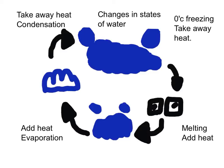Take away the heat. Melting the ice equals to add heat to make water again. Add heat by doing evaporation for it turning into gas. And then, you turn it into the gas and a liquid to take away the heat is condensation.